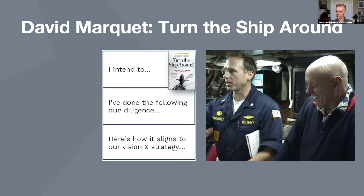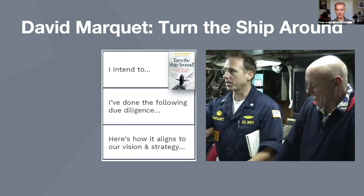They went to the boardroom, talked it out, and basically adopted the pattern right there: the only way to be safe is for the people who know how the ship works to say 'here's what I intend to do, here's the due diligence, and here's how it's aligned with our mission.' Marquet said that within 24 hours it felt like a different ship. That ship, the worst performing ship in the Navy, within a few years completely turned it around.